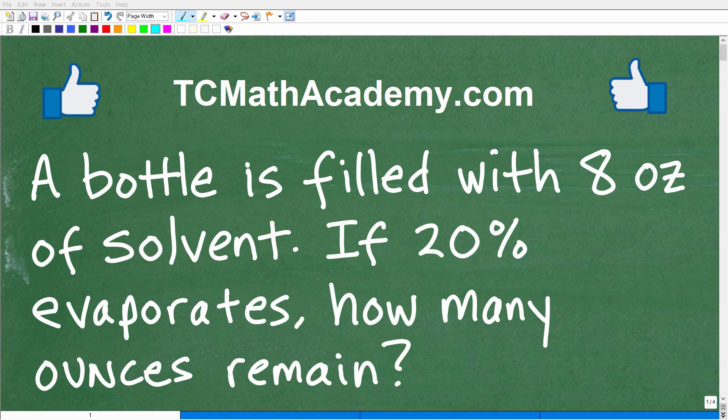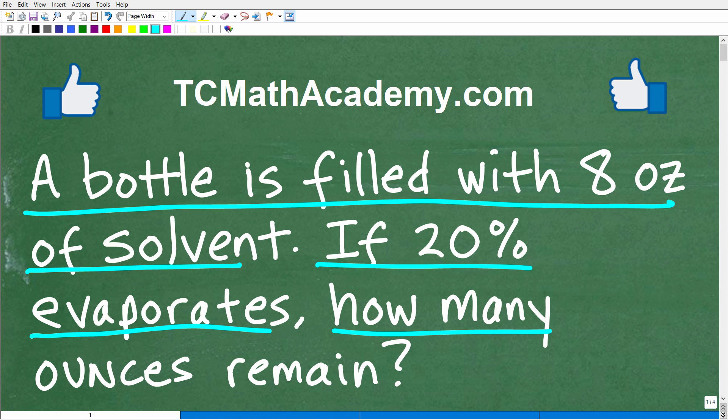Okay, so get ready to put your math skills to work to solve this interesting little math word problem. Matter of fact, let me go ahead and read the problem. It is the following: A bottle is filled with eight ounces of solvent. If 20% of this solvent evaporates, how many ounces remain?